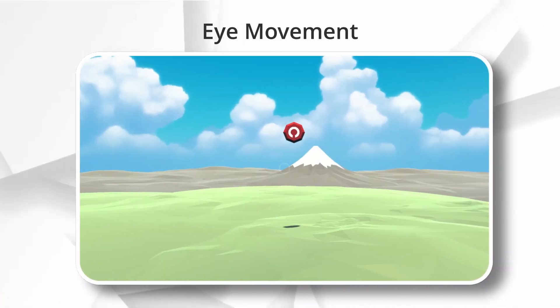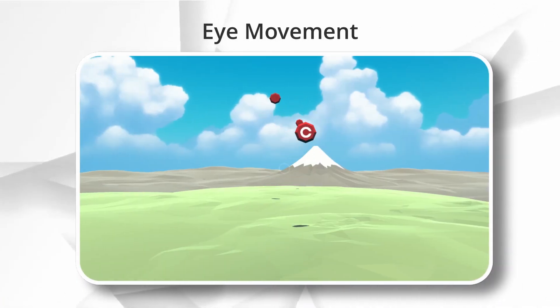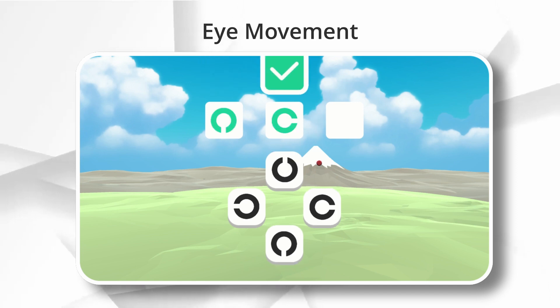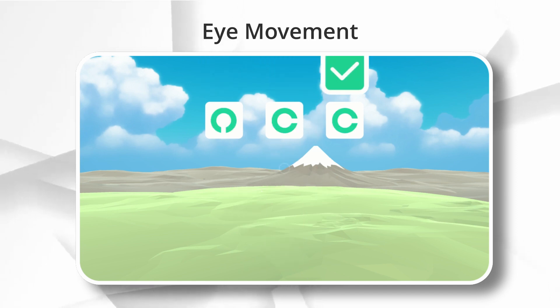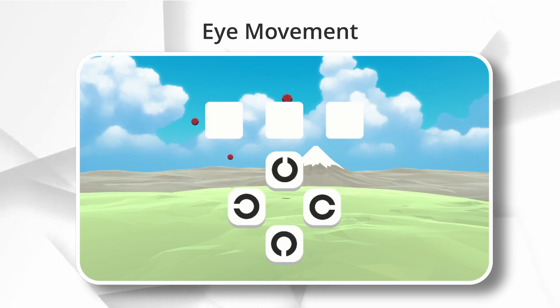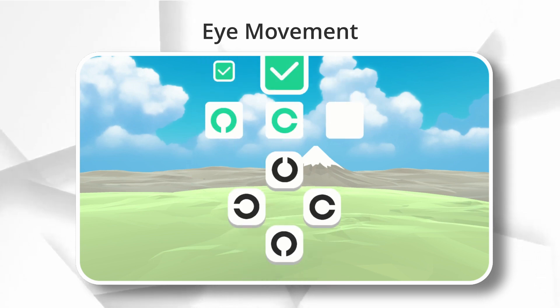Eye movement involves moving your eyes quickly. Here's an example. In the game's symbol order, you need to move your eyes quickly to see the symbols that are shown, then repeat the sequence of those symbols.